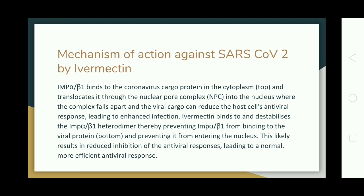The mechanism of action of Ivermectin against SARS-CoV-2 is as follows: IMP alpha/beta 1 binds to the coronavirus cargo protein in the cytoplasm and translocates it through the nuclear pore complex into the nucleus, where the complex falls apart and the viral cargo can reduce the host cell's antiviral response, leading to enhanced infection. Ivermectin binds to and destabilizes the IMP alpha/beta 1 heterodimer, thereby preventing IMP alpha/beta 1 from binding to the viral protein and preventing it from entering the nucleus. This likely results in reduced inhibition of the antiviral responses, leading to a more efficient antiviral response.